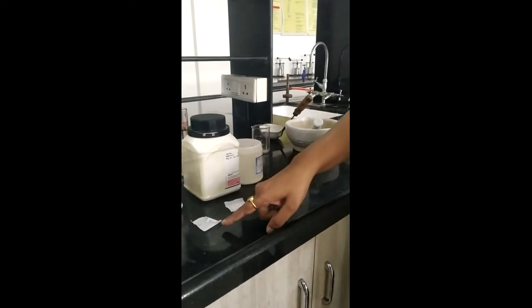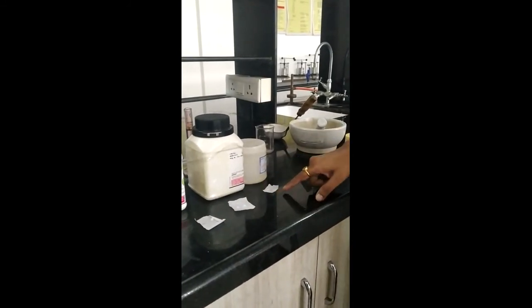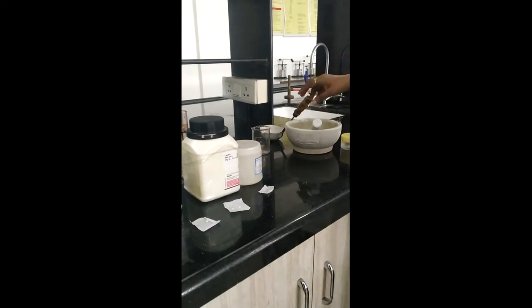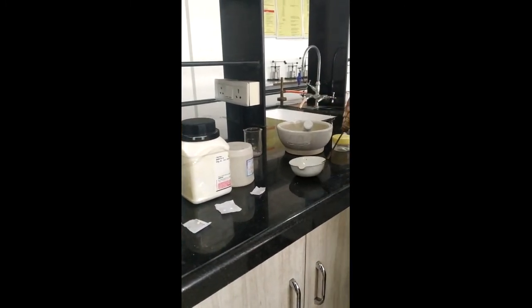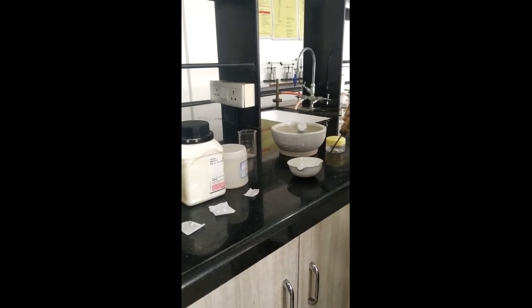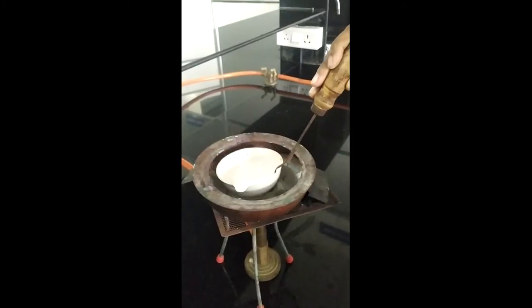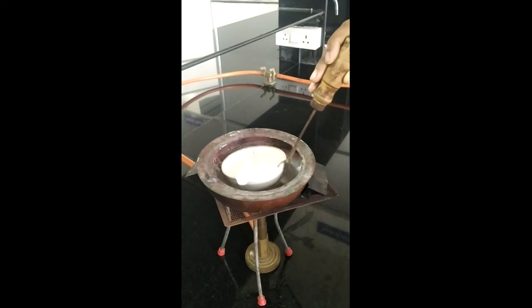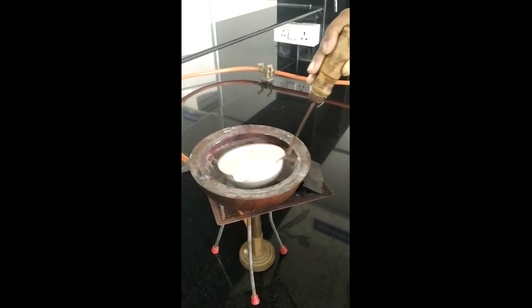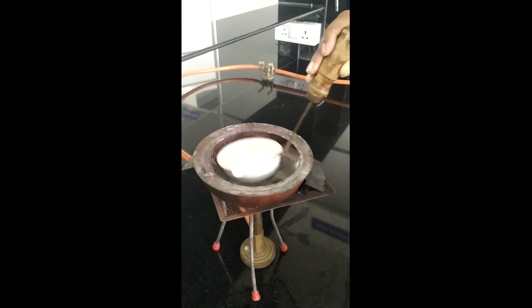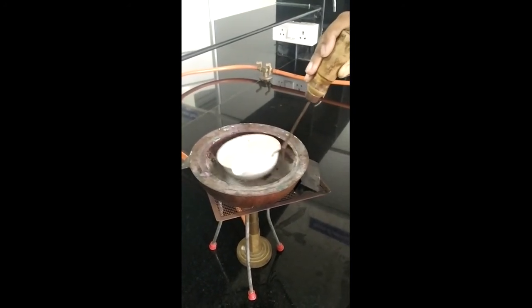We require emulsifying wax, white soft paraffin, and liquid paraffin. Now I am going to transfer all these ingredients into this evaporating dish and then we will proceed for heating on water bath. After melting all these ingredients, we mix it properly.